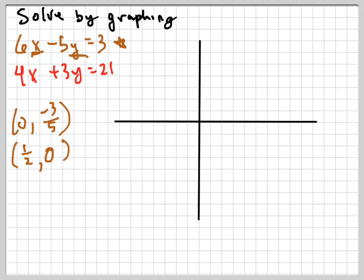So now I'm going to carefully plot those points. Zero, negative three-fifths is right about there. It's a little bit more than negative one-half, or a little bit lower than negative one-half, and positive one-half comma zero is right here. Now this obviously is going to be tough, because those lines, when I draw these lines in, there's going to be a lot of error involved probably when I draw them.